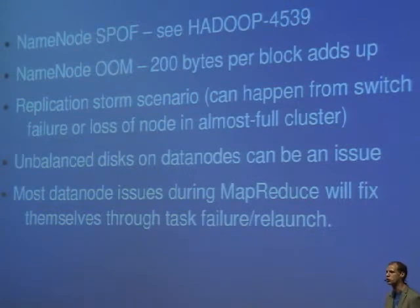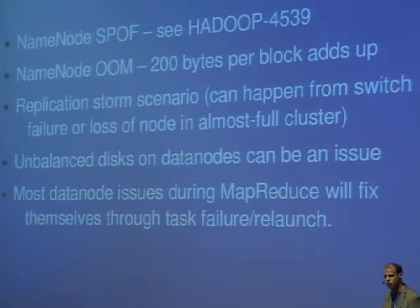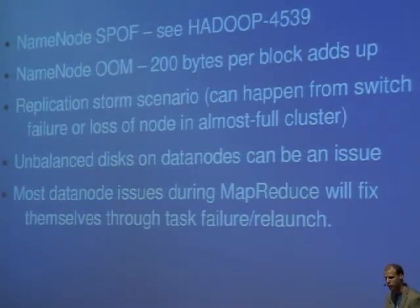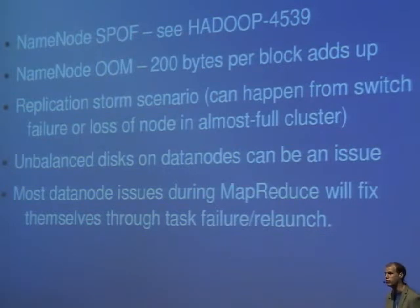Another issue is name node out of memory. This happens if you don't increase your heap size as data grows — it's about 200 bytes per block. With a 20-gig name node you'll hold a lot of data if blocks are all 64 megabytes each, but it is an issue. An interesting one is the replication storm: if the name node has to re-replicate data as data nodes go down and it's overwhelmed, the file system grinds to a halt.